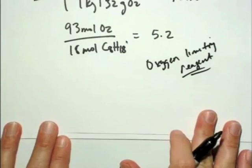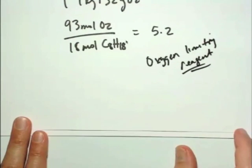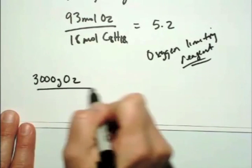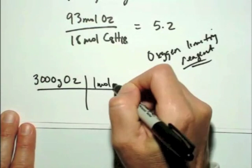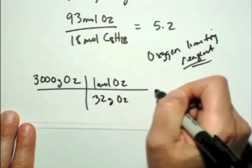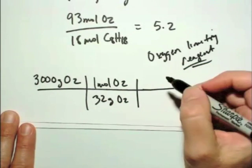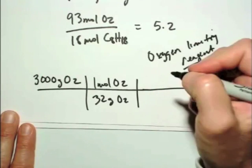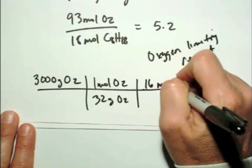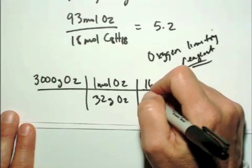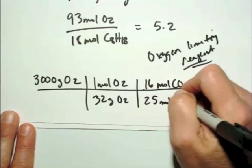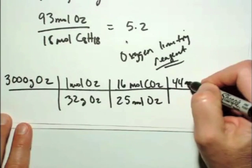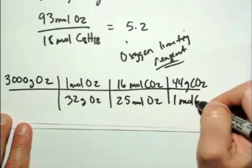You would just start with your oxygen as your limiting reagent and convert to grams of carbon dioxide. So we'll just start with 3,000 grams of oxygen and convert to moles of oxygen, 32 grams of oxygen. And then, now we're in moles of oxygen, and we want to go to moles of carbon dioxide. And from the balanced chemical equation, 16 moles of carbon dioxide for every 25 moles of oxygen consumed in that particular problem. And then back to grams of carbon dioxide, 44 grams of carbon dioxide per 1 mole of carbon dioxide.